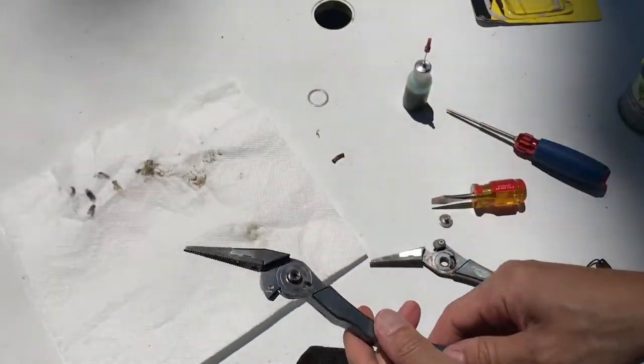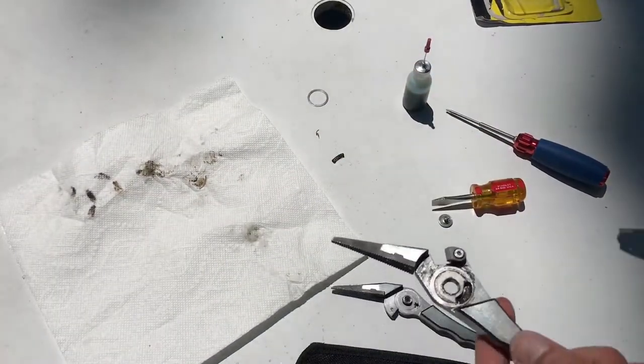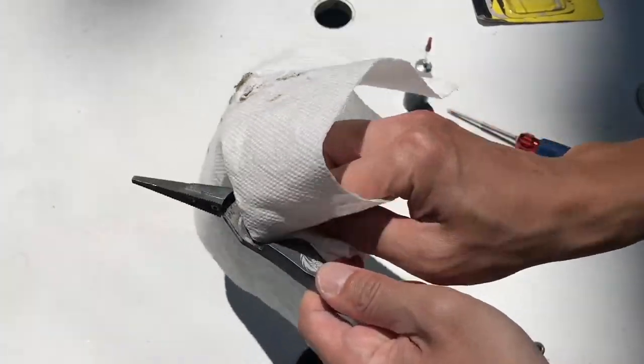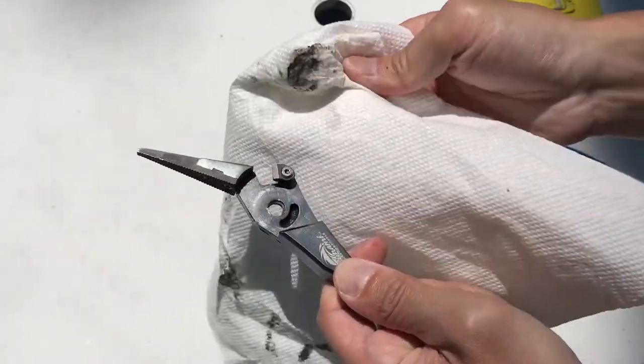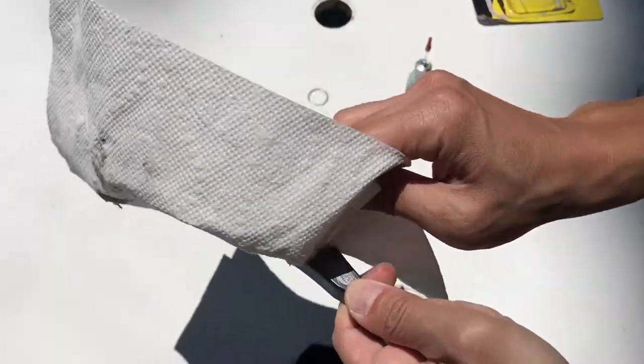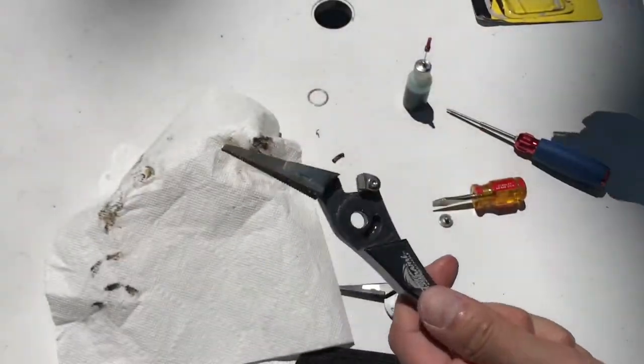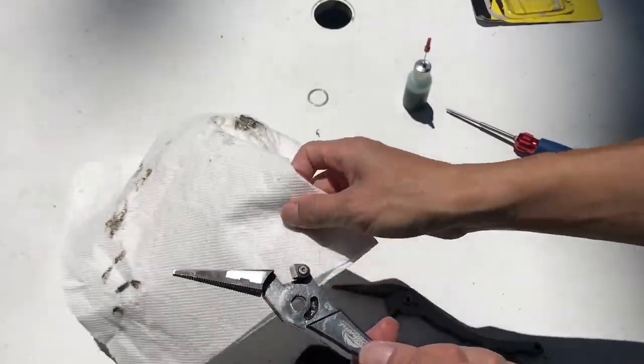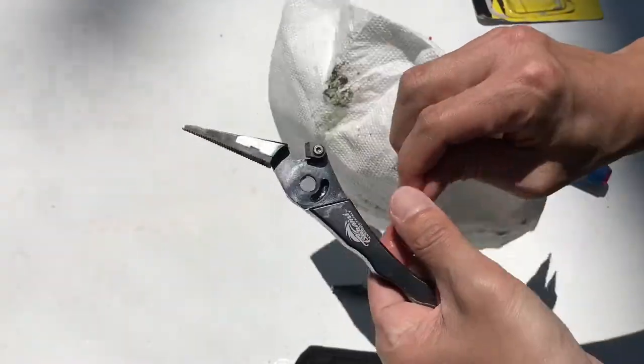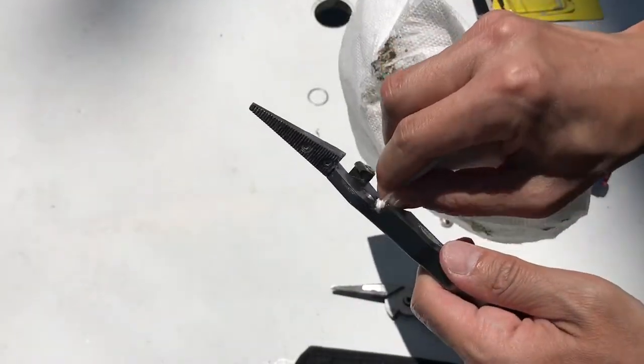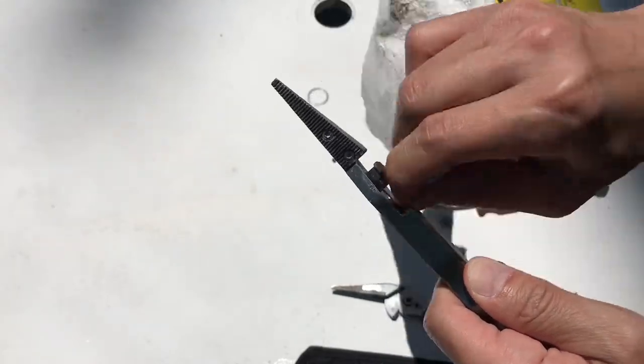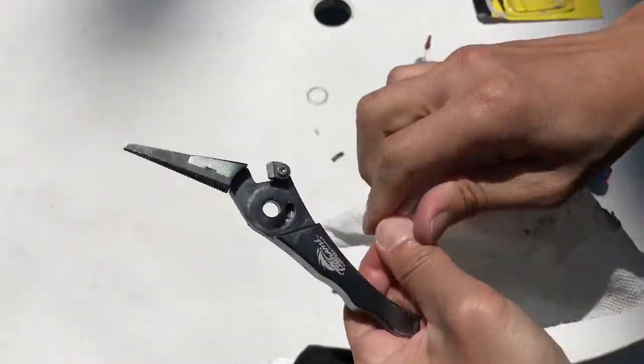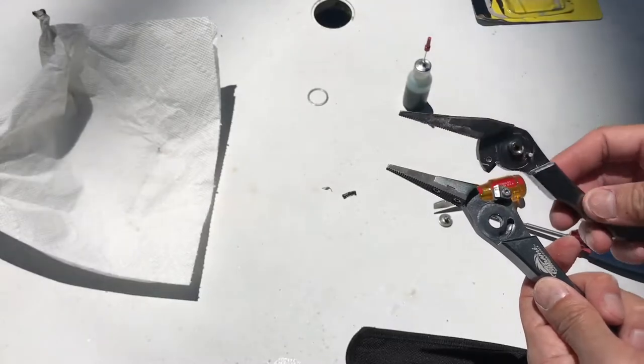You could use like a carb cleaner too, probably, or whatever. This basically dissolves all the grease and the oil so you can get it all off and the sand will fall off that way. You could probably use a Q-tip too, but I'll just clean this up. This is where the spring goes in, so I'm going to clean this up nicely.